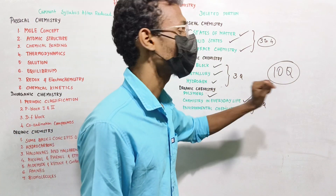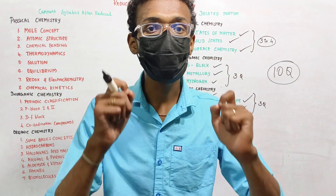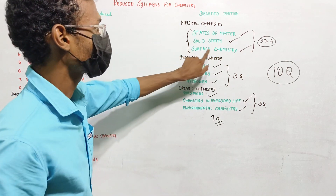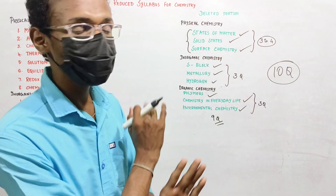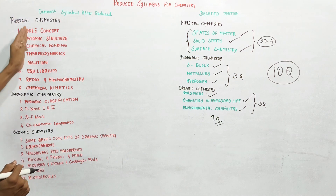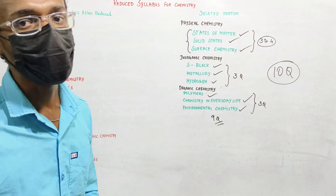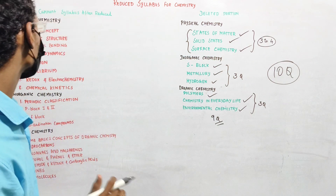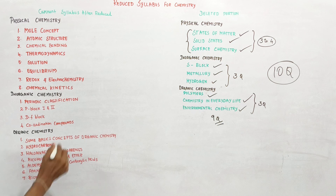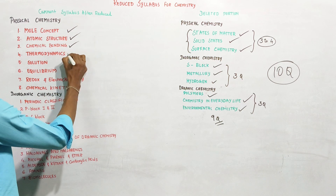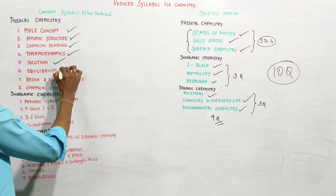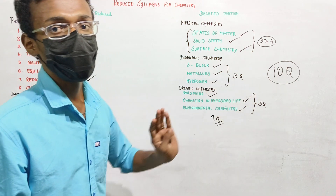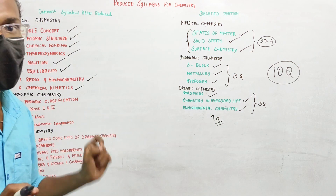Students often ask what topics to write. These are very interesting lessons. The physical chemistry topics include: solid state, surface chemistry — totaling four questions. The key concept topics are: atomic structure, chemical bonding, thermodynamics, solution, equilibrium, redox, electrochemistry, and chemical kinetics — eight lessons in combination, giving around four questions.